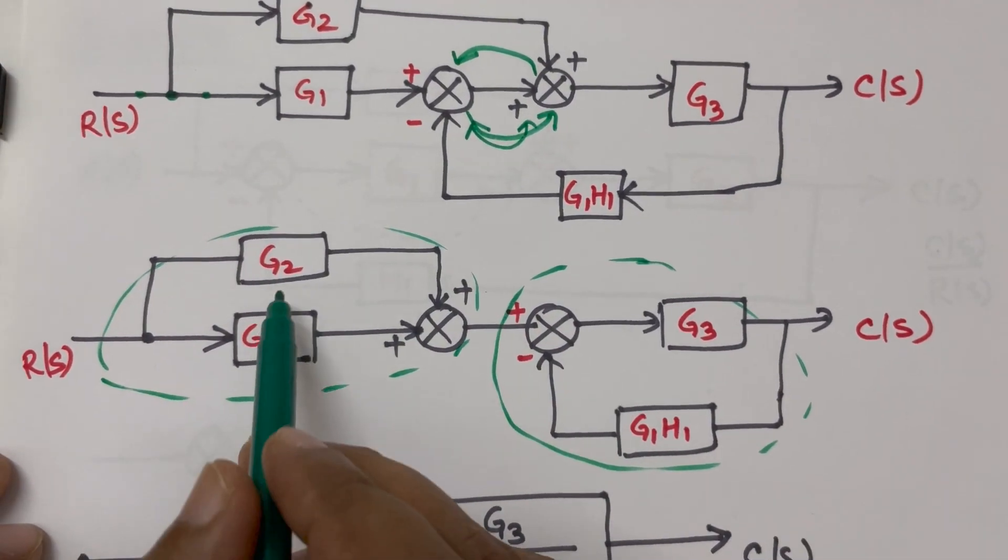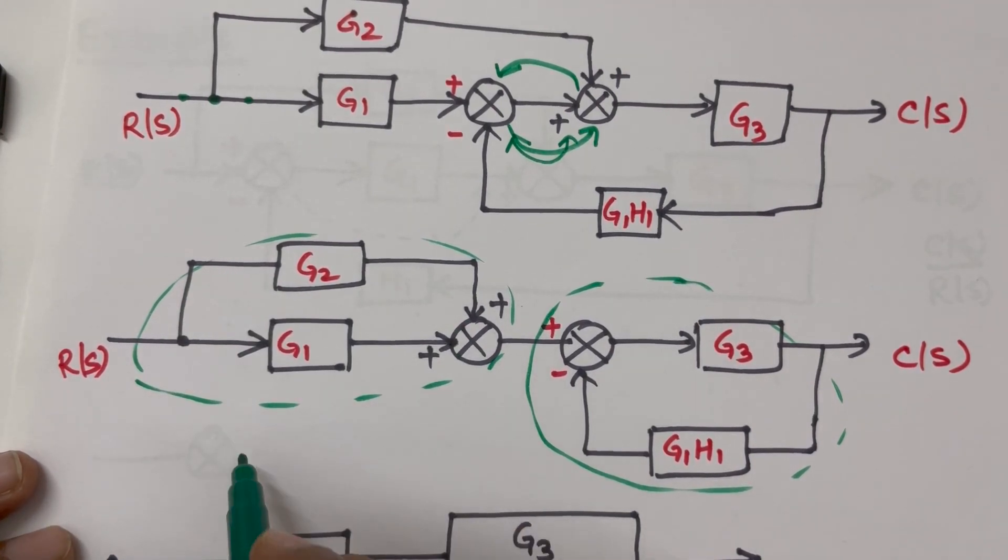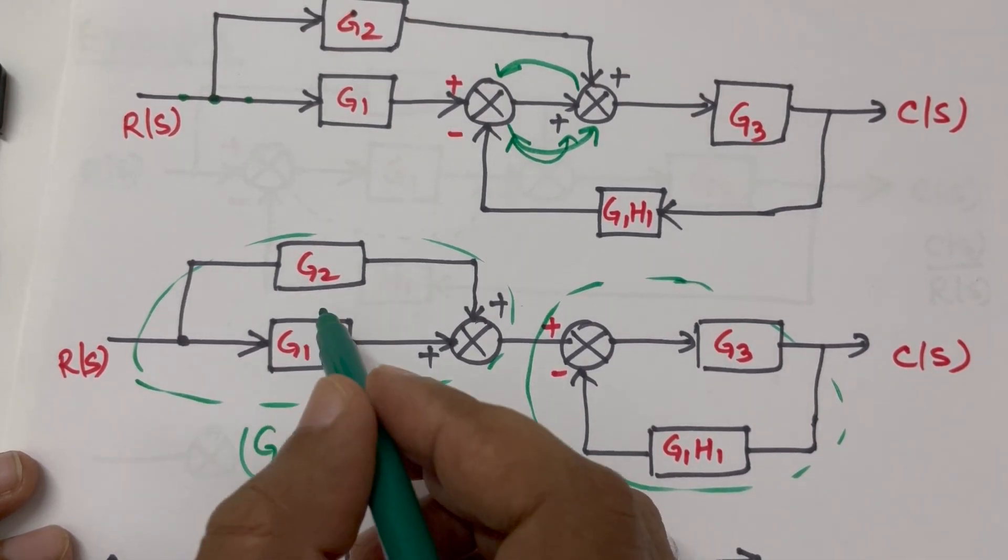You know that if there is parallel combination, both are starting at the same point and ending at the same point - in that case the transfer function will become G1 plus G2, that means addition of these two.